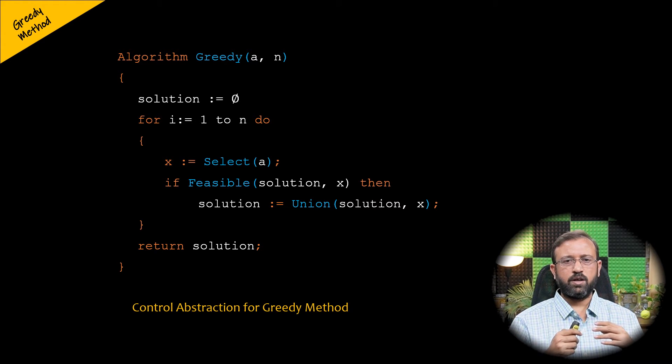This general algorithm for greedy method is also known as control abstraction. What this means is that the flow of control for the approach is defined in the algorithm, but operations or functions—that is select function, feasible function, and union function—are left undefined and depends on the problem being solved. So this is the control abstraction for the greedy method.